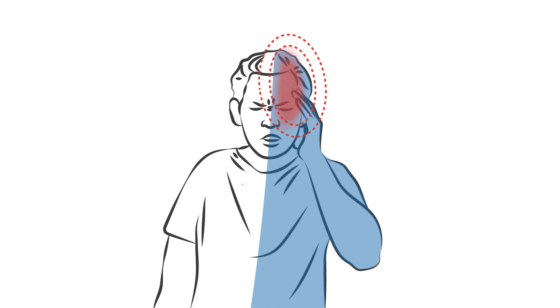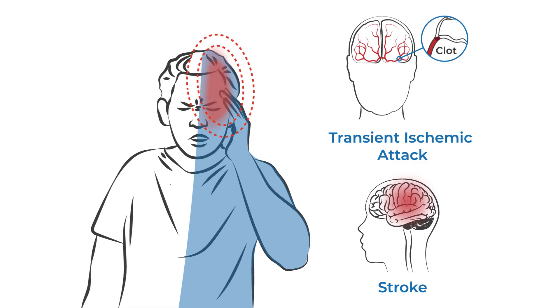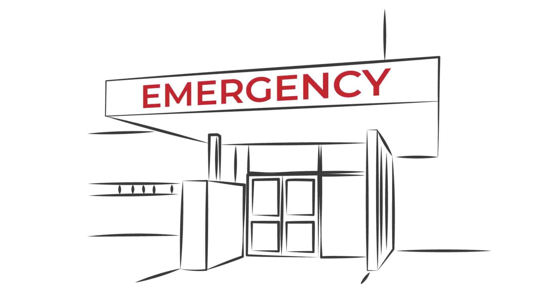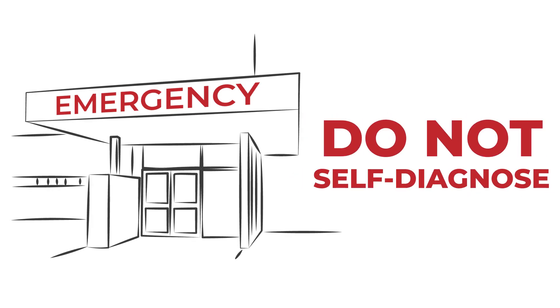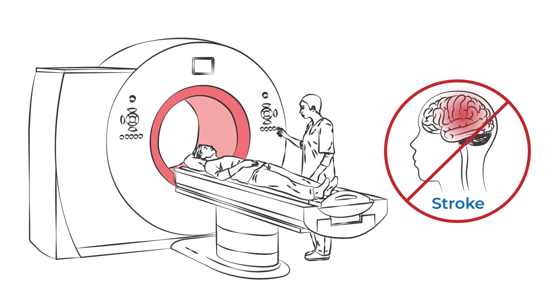A hemiplegic migraine attack can closely resemble a transient ischemic attack or stroke. If you believe you are having a hemiplegic migraine attack, go to the emergency room and do not self-diagnose. A CT scan or MRI can rule out stroke.